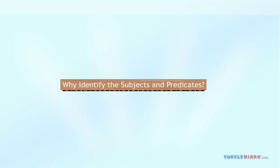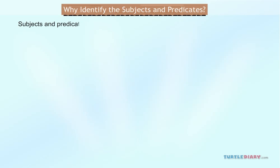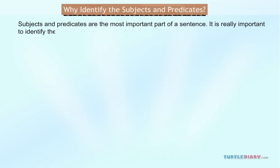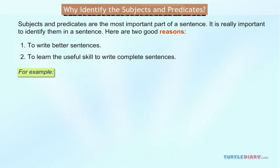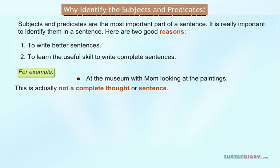Why identify the subjects and predicates? Subjects and predicates are the most important part of a sentence. It is really important to identify them. Here are two good reasons: to write better sentences, and to learn the useful skill to write complete sentences. For example, 'At the museum with mom looking at the paintings' is actually not a complete thought or sentence — there is no subject and predicate.